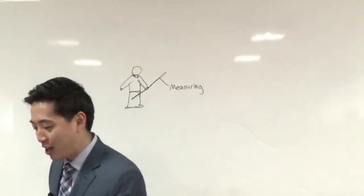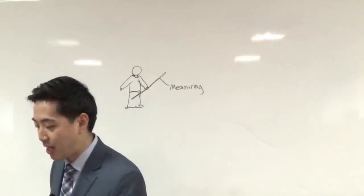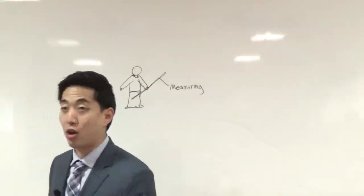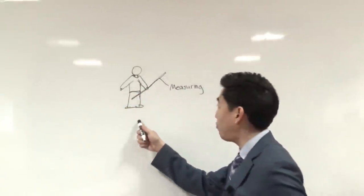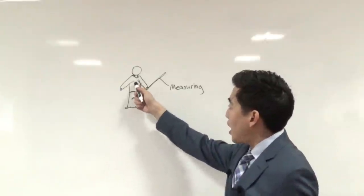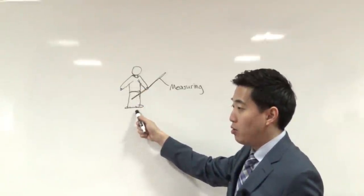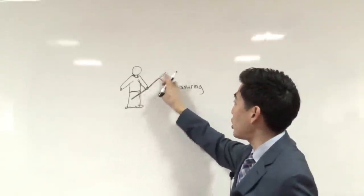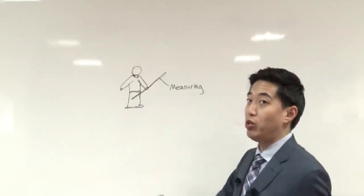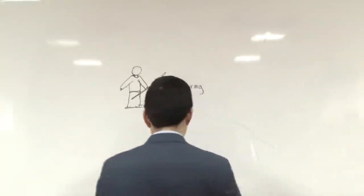You're going to use the measuring stick to measure the temple of God. In Revelation chapter 11 verse 1, I read to you that the apostle John was told to get a reed like unto a rod, so he gets a reed like a rod, like a measuring stick. He's going to use it to measure the temple of God.